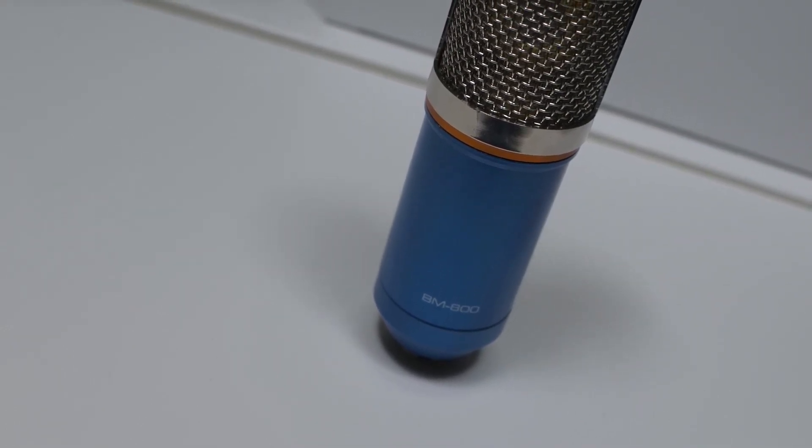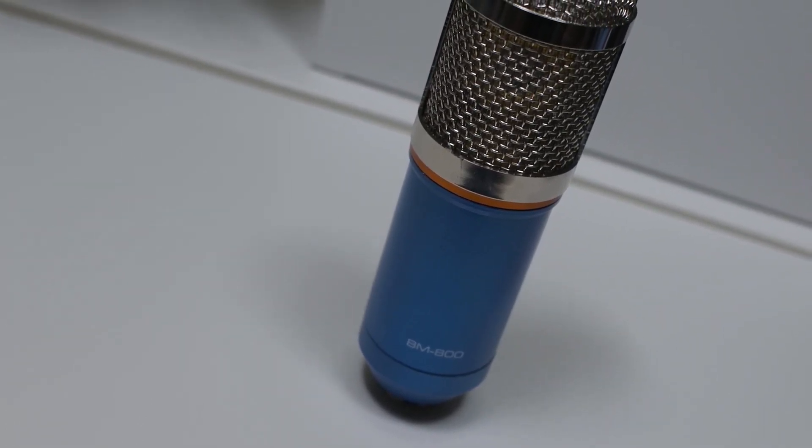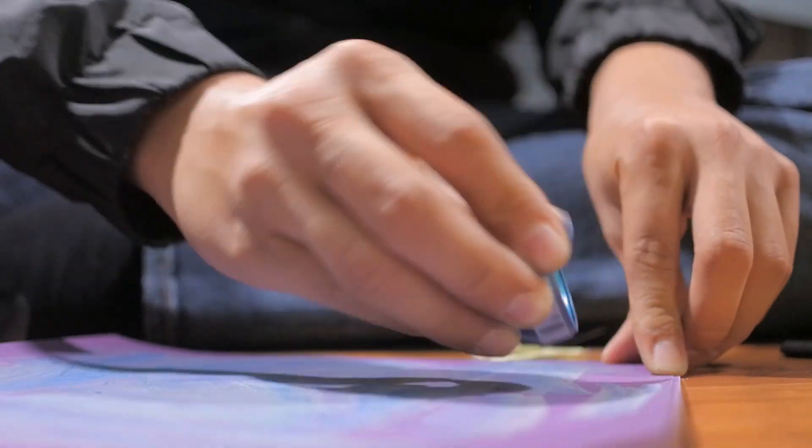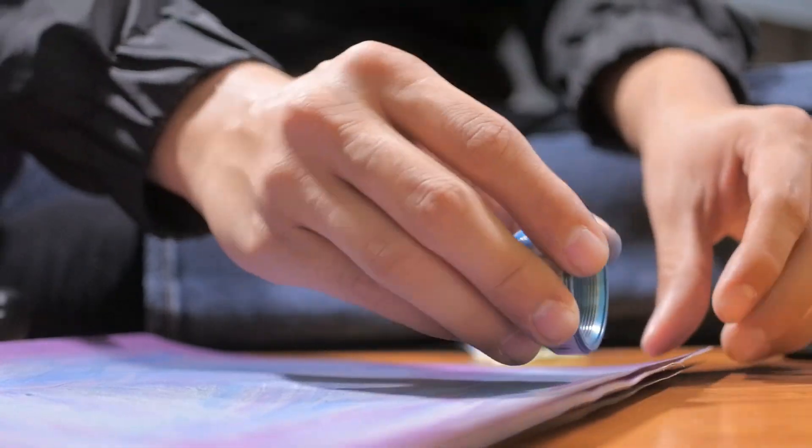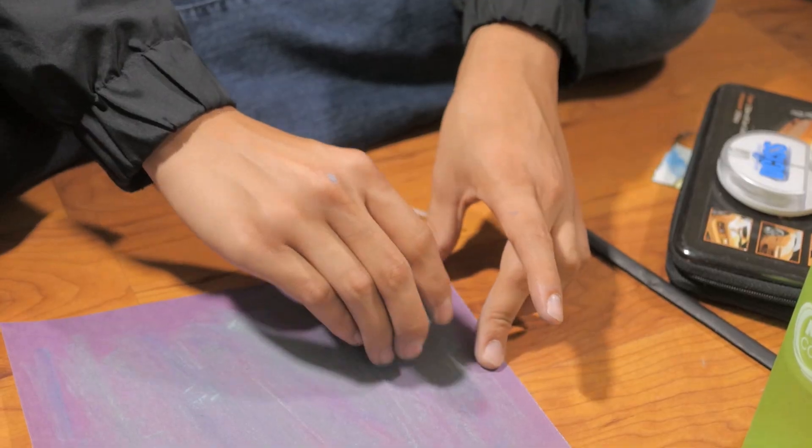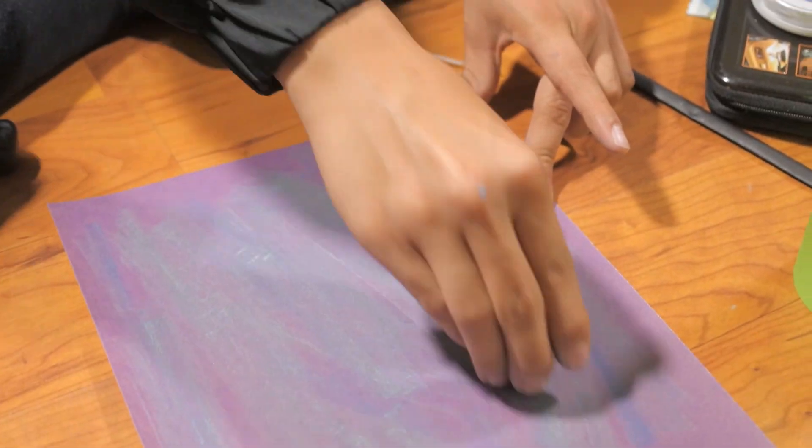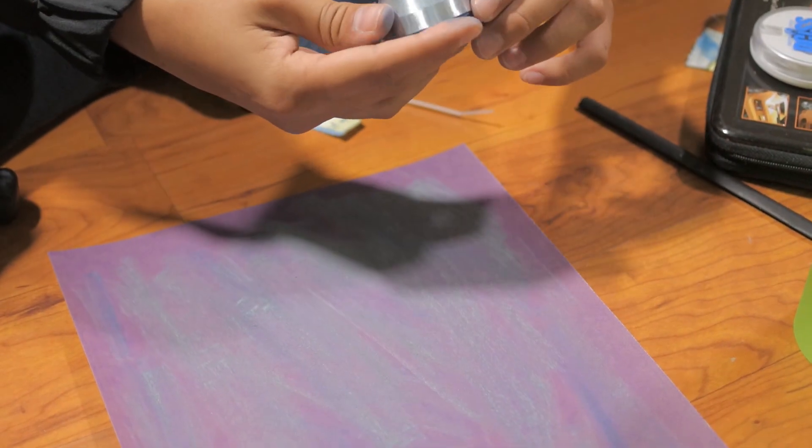The microphone originally had a blue color to it, which we thought looked a bit unprofessional, so we decided to give it a fresh paint job. In order to spray paint on top of the current paint, we had to sand down the current color so the bare aluminum body was visible. I used fine sandpaper to do this.